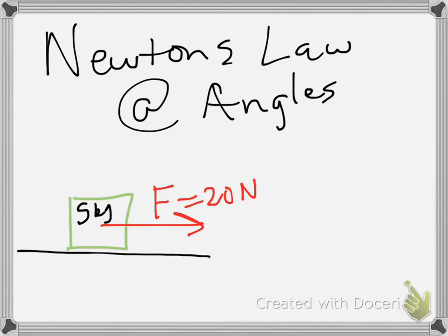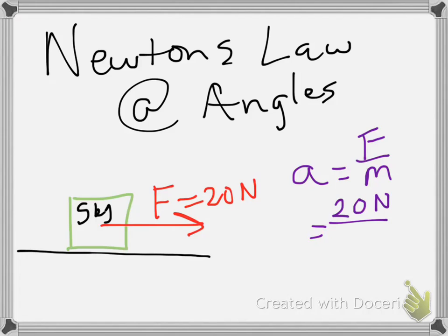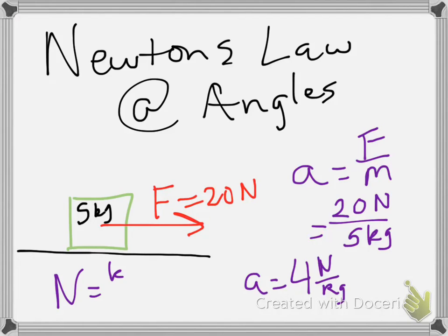The question is: how much is the acceleration on the box? We know that acceleration equals force divided by mass, so acceleration equals 20 Newtons divided by 5 kilograms, which gives 4 Newtons per kilogram. Since a Newton is a kilogram·meter per second squared, the kilograms cancel, and we're left with 4 meters per second squared. So that's just basic Newton's laws.